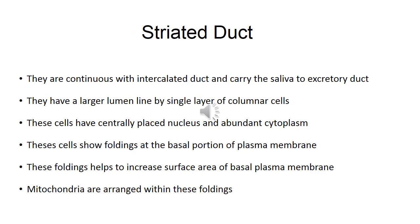The striated duct is continuous with the intercalated duct and carries saliva to the excretory duct. It has a larger lumen lined by a single layer of columnar cells with centrally placed nucleus and abundant cytoplasm. These cells also show foldings at the basal portion of the plasma membrane, which help to increase the surface area of the basal plasma membrane.